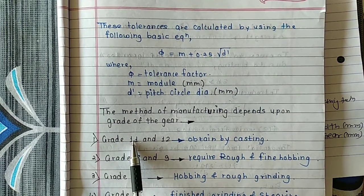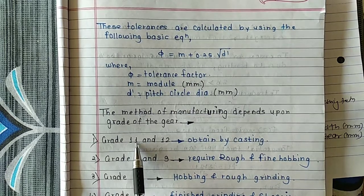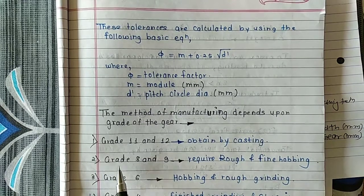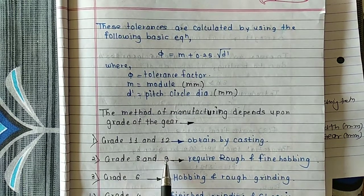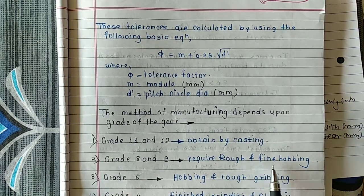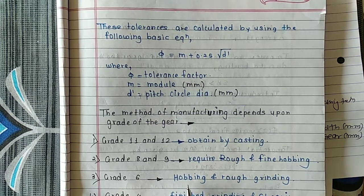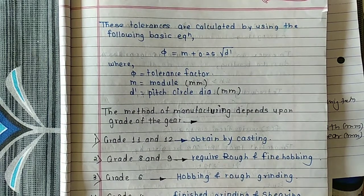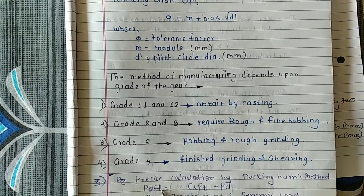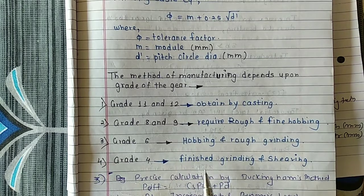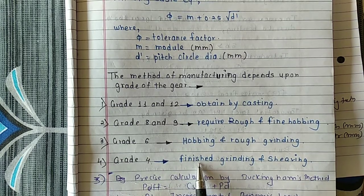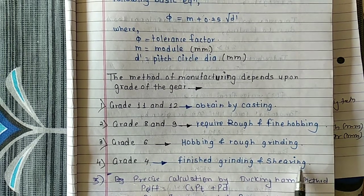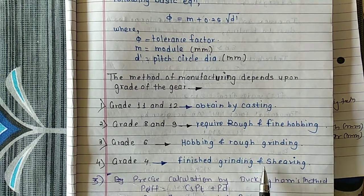Grade 11 and grade 12 gears are obtained by casting — a rough manufacturing method. Grade 8 and grade 9 require rough and fine hobbing. Grade 6 gears are manufactured by hobbing and rough grinding. Grade 4 and above are manufactured by grinding and shaving operations, which are super-finishing operations — that is why the error is less for these grades.